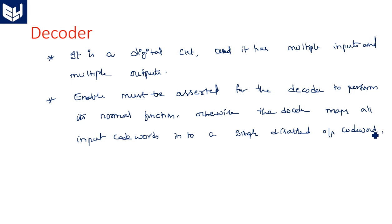The main application of decoders, multiplexers, and encoders is in communication systems. When we pass a code word it should be encoded, and after being received by the receiver it must be decoded by the decoder. In order to decode that information, the decoder must be enabled via the enable pin — otherwise the correct information will not be retrieved.